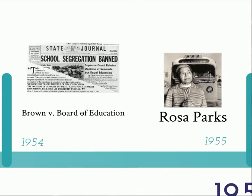Brown v. Board overturned separate but equal, saying that separate education facilities were inherently unequal. As we discussed earlier, Rosa Parks was a key figure in civil rights history. In December of 1955, she refused to give up her seat in the colored section of a bus to a white passenger. This was essential in desegregating buses in 1956.